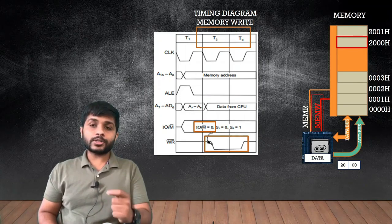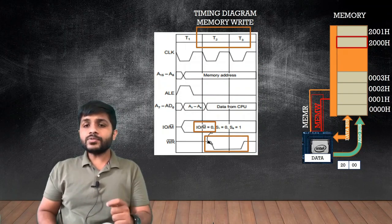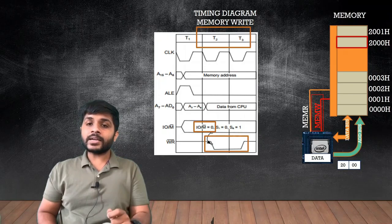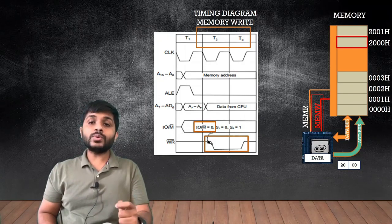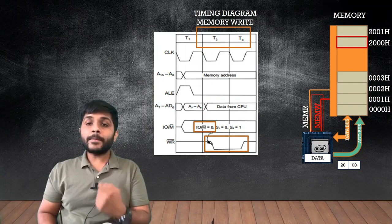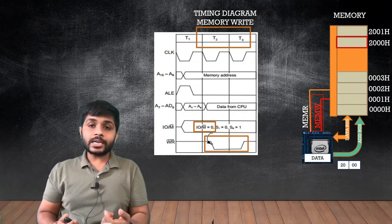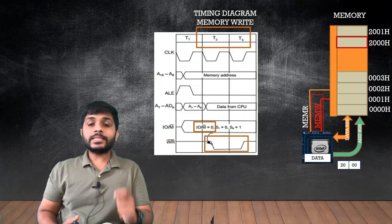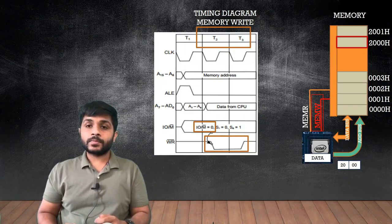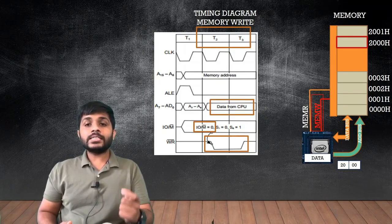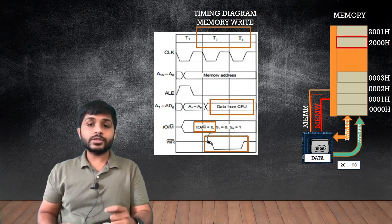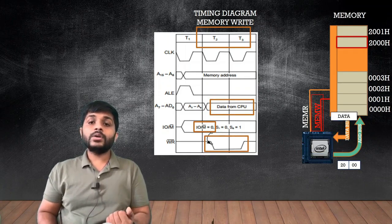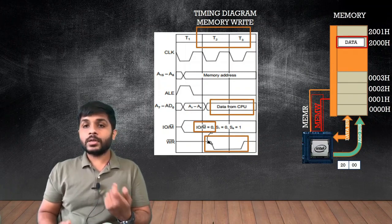You can see on the screen that the processor has sent the memory write signal to the memory. When memory receives the memory write control signal, it understands that the processor wants to write some data to the selected memory location, which is 2000h. The memory will then wait for the data to be sent by the microprocessor. After some time, the processor will send the data using the data bus to the selected location, and the data will be stored in memory location 2000h.